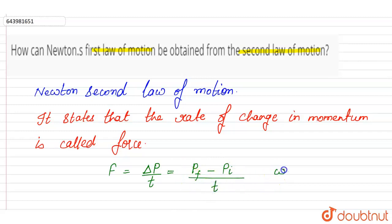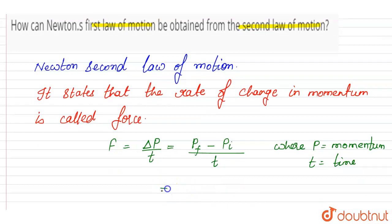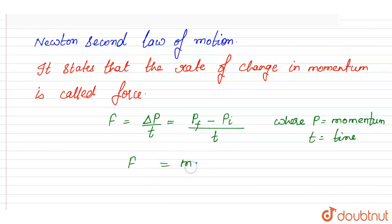Per unit time, where t is equal to time. Now, since the product of mass and velocity is momentum, p final is equal to m into v final. So, force is equal to m into v final minus m into v initial, all divided by time t.